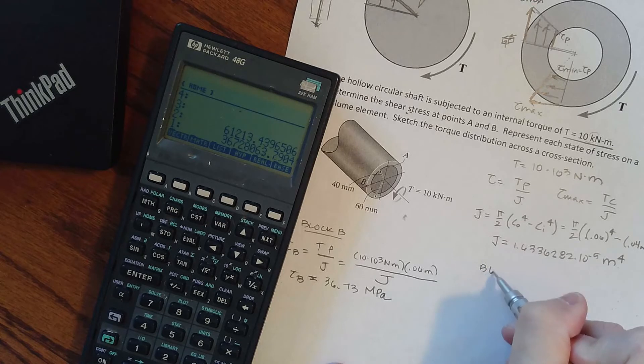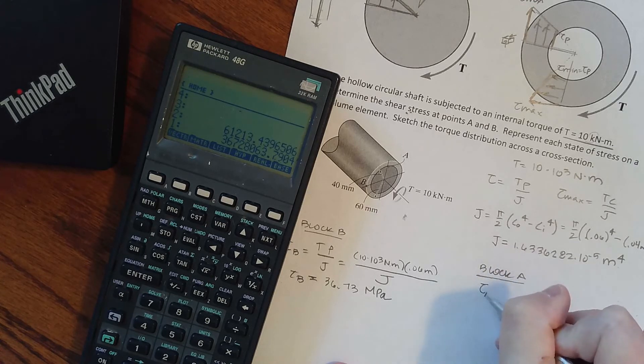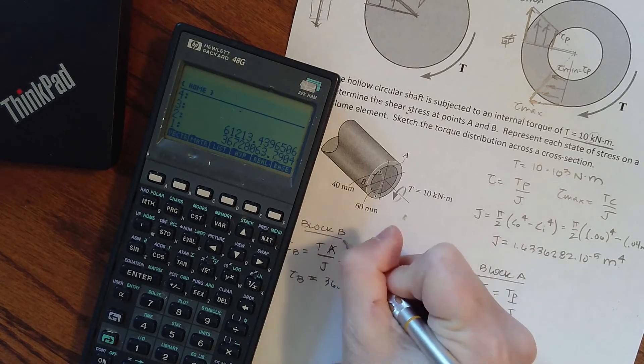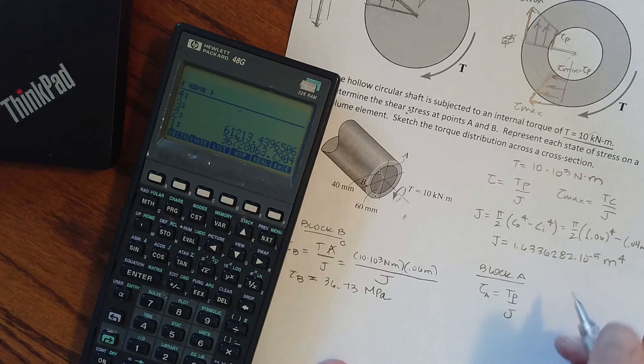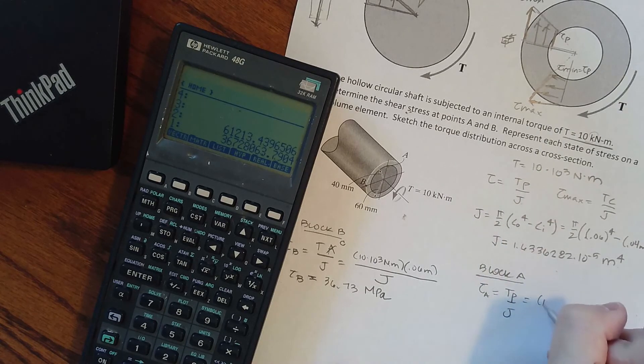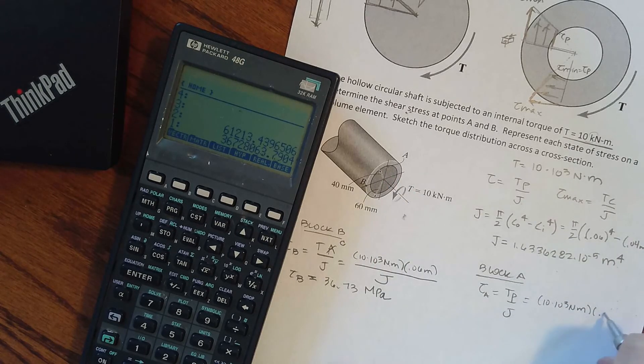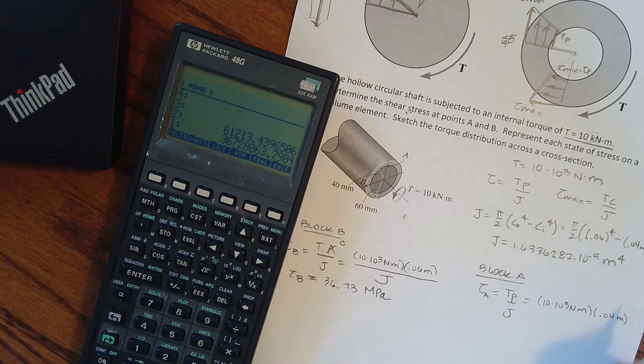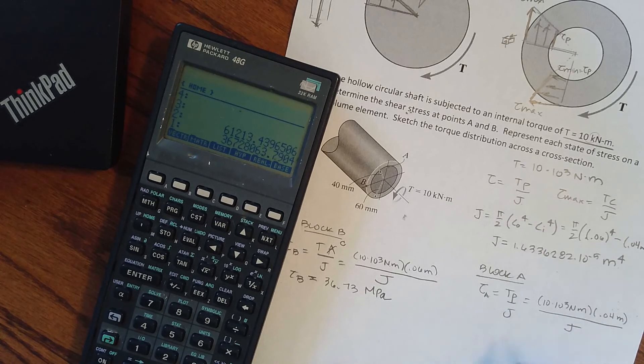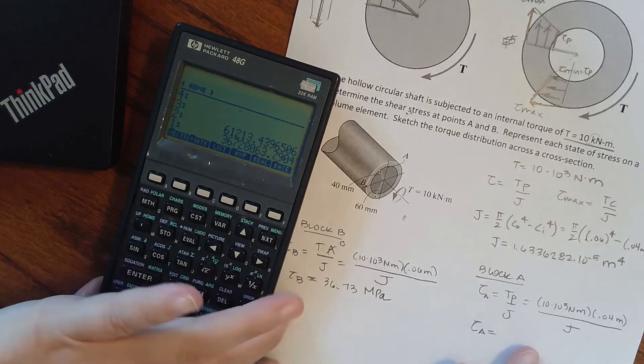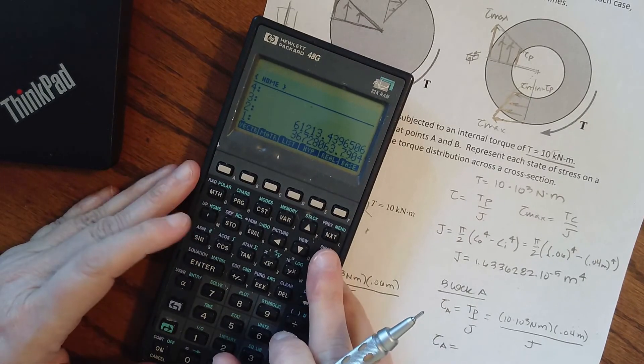I can do the same thing with block A. I know that block A is going to be some radial length, so technically that should have been a C because we were looking at maximum. So I have 10 times 10 to the third newton meters and its radial length is 0.04 meters, and then we're going to divide it by J.